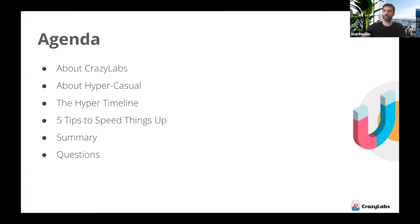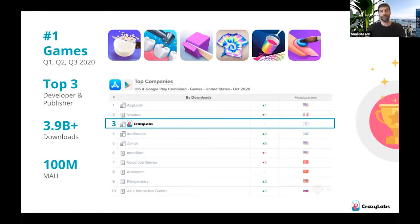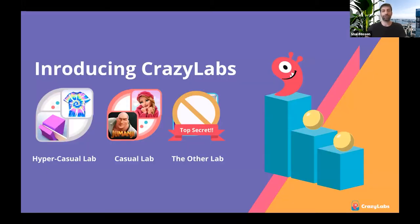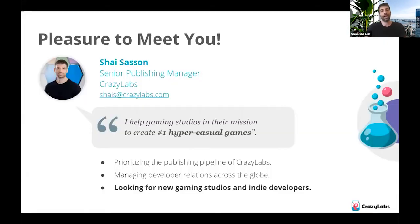For those who don't know Crazy Labs yet, Crazy Labs is a top-three publisher and game developer worldwide. We've recently almost reached four billion downloads and have over 100 million monthly active users. Crazy Labs is divided into three labs: the biggest is the hyper casual lab, the second develops and publishes casual games — titles like Jumanji with Sony Pictures, Charlie's Angels, Super Stylist, and many others — and the third is a secret lab that develops indie games.